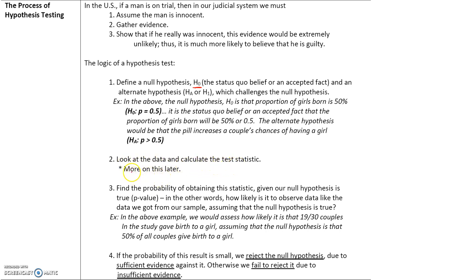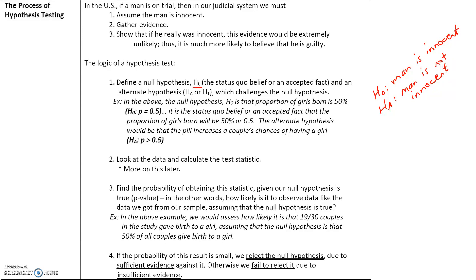That's the first step. The second step is we look at the data and calculate the test statistic — we will talk more about this later. This is the same as gathering evidence in the trial example. Step three: we find the probability of obtaining the statistic given that our null hypothesis is true — in other words, how likely is it to observe data like our sample data assuming the null is true.